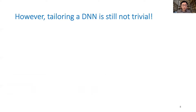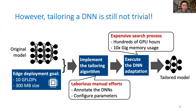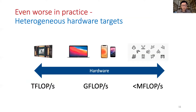However, the end-to-end model tailoring process is still uneasy. It first involves significant efforts to precisely implement and configure the algorithms. Further, adapting the model structure is very resource-intensive, involving hundreds of GPU hours and using tens of gigs of memory. Even worse in practice, the deployment environments nowadays are extremely heterogeneous. Different edge devices have an increasingly diverse hardware capability, ranging from hundreds of teraflops per second to less than megaflops per second.